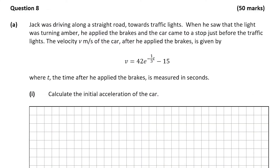Question 8, which is a 50 mark question. Part A is on time, speed and distance, as well as a bit of calculus. And then Part B is on financial maths. So let's start with Part A — we're told that Jack is driving along a straight road towards traffic lights.